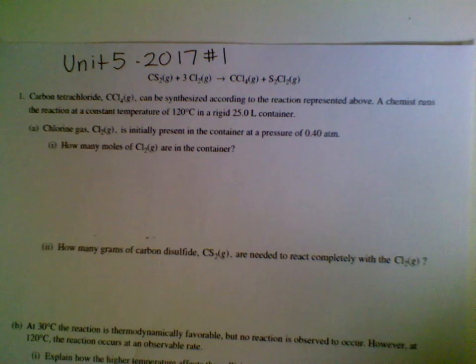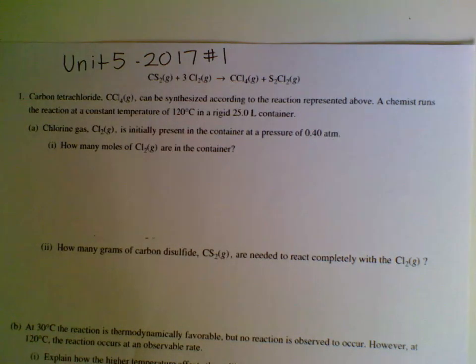If we take a look, they give you to start off with the equation CS2 plus 3Cl2 turns into CCl4 and S2Cl2. So if we start looking at the actual information, it says carbon tetrachloride can be synthesized according to the reaction represented above. A chemist runs a reaction at a constant temperature of 120 degrees in a 25 liter container. This feels like an ideal gas law problem coming up.